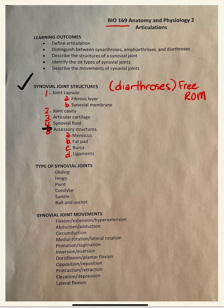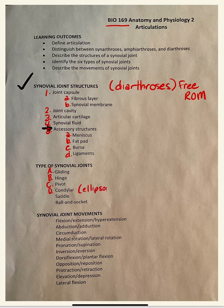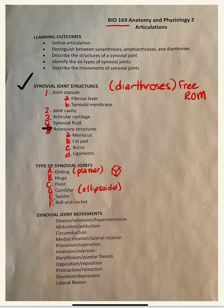The types of synovial joints we'll see are gliding, hinge, pivot, condylar (also known as ellipsoidal), saddle, and ball and socket. You might also notice that gliding joints are called planar, as in flat, and they look like cubes with two flat surfaces articulating.